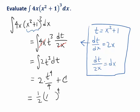And instead of t, let's write the original variable x squared plus 1. Here we have our answer. This is the general antiderivative of the function we started with.